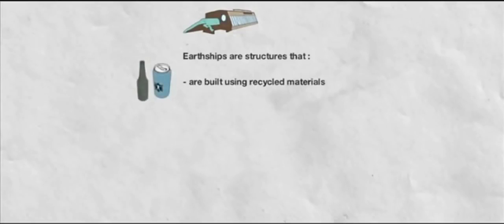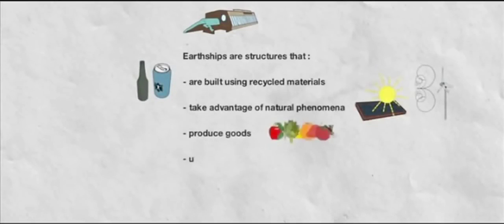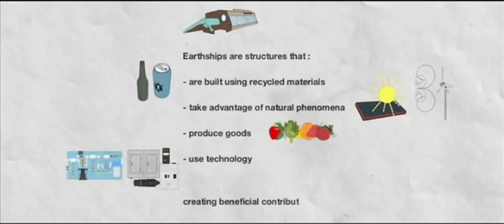At the end, Earthships are structures that are built using recycled materials, take advantage of natural phenomena, produce goods and use technology, creating beneficial contributions to environmental issues like the following.